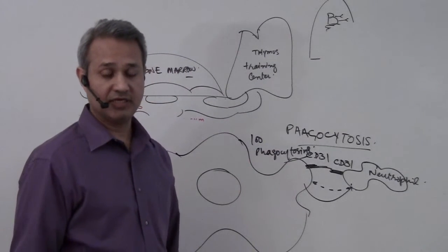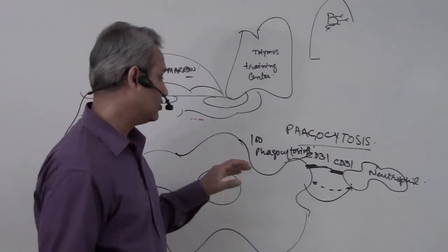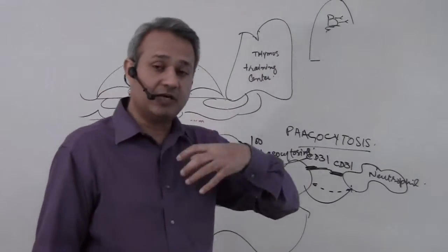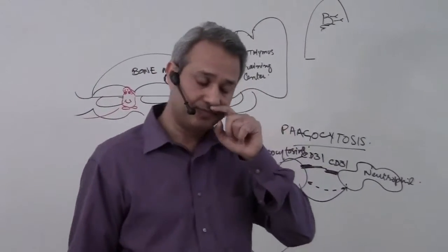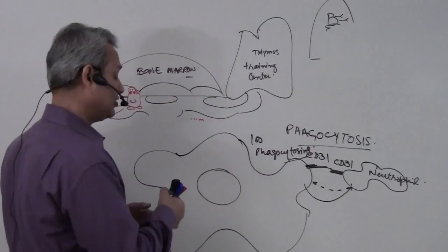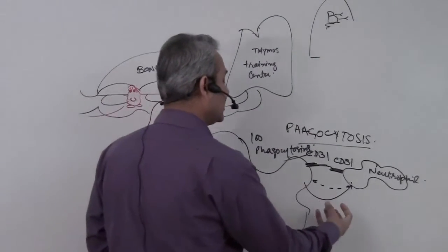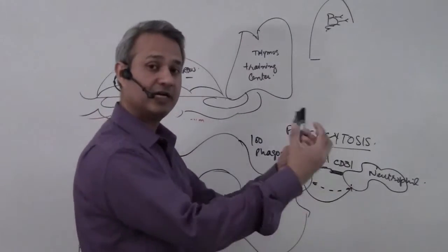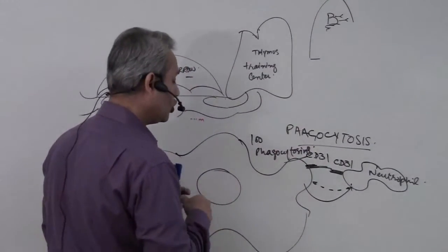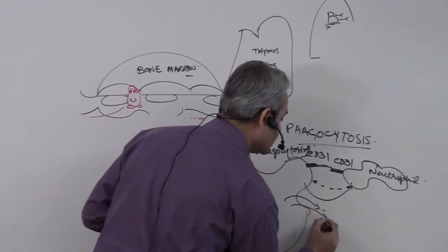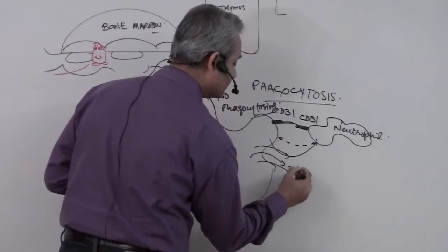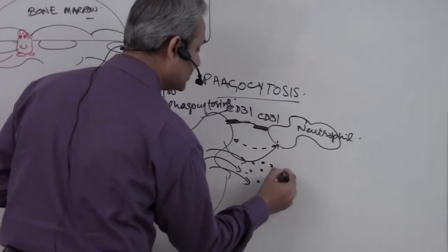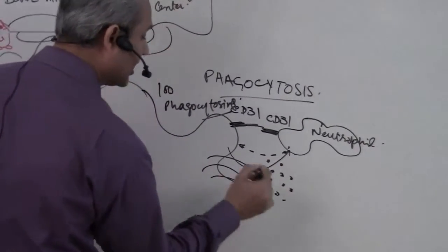Macrophages can perform about 100 phagocytosis events before they become victims of their own digestive enzymes. Every time a macrophage engages in phagocytosis, it extrudes chemical substances called cytokines.